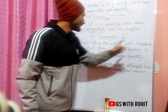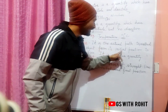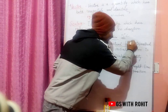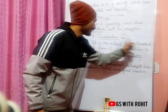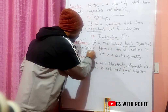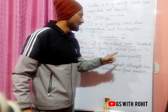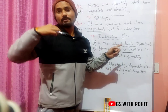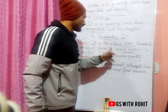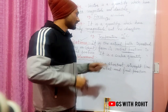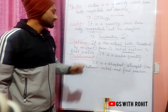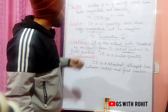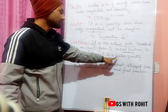Distance is the actual path traveled by an object from its initial position to the final position. We can measure distance in kilometers, meters, or centimeters. Distance is a scalar quantity.